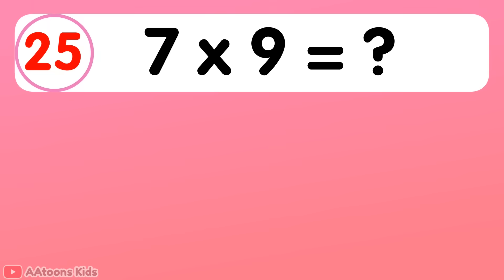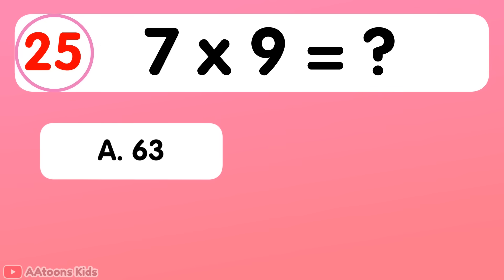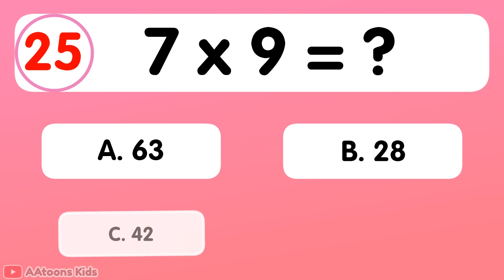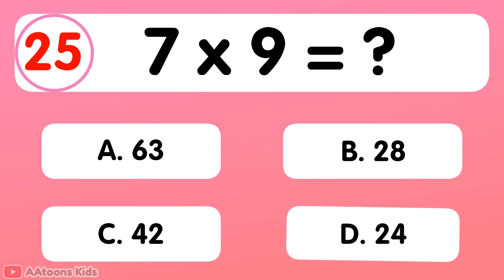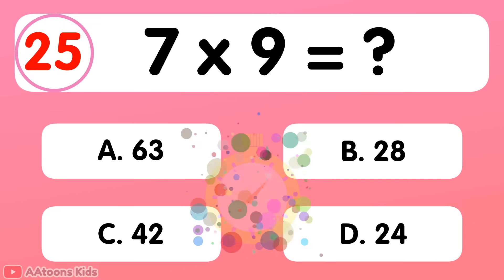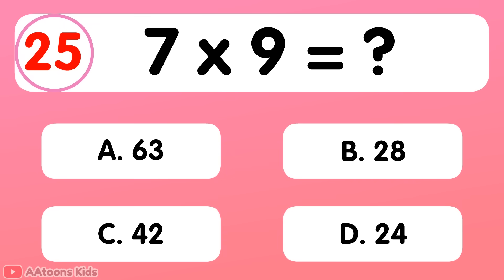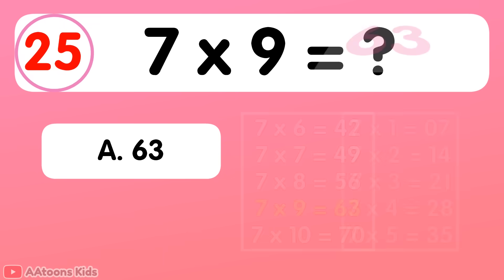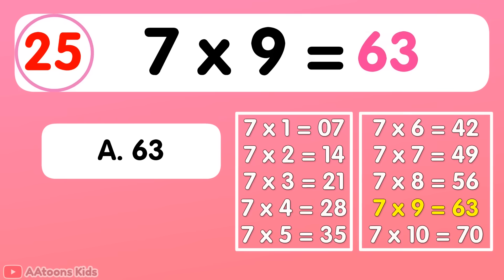7 times 9 is equal to... 63. 7 times 9 is 63.